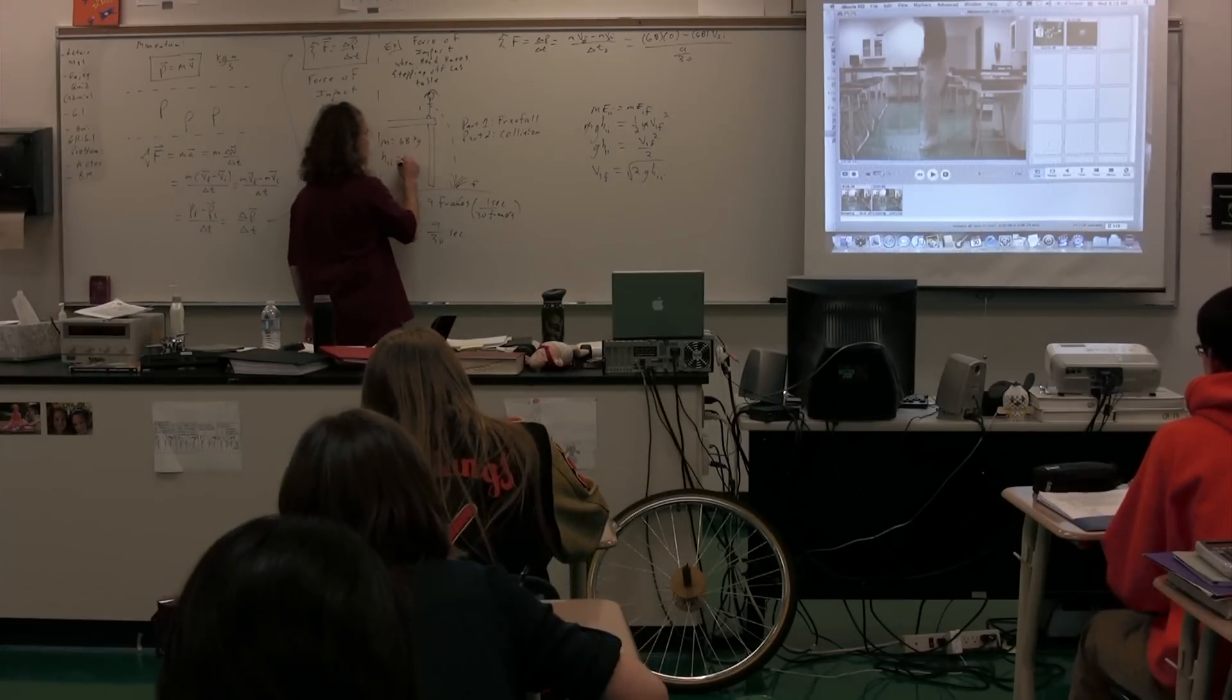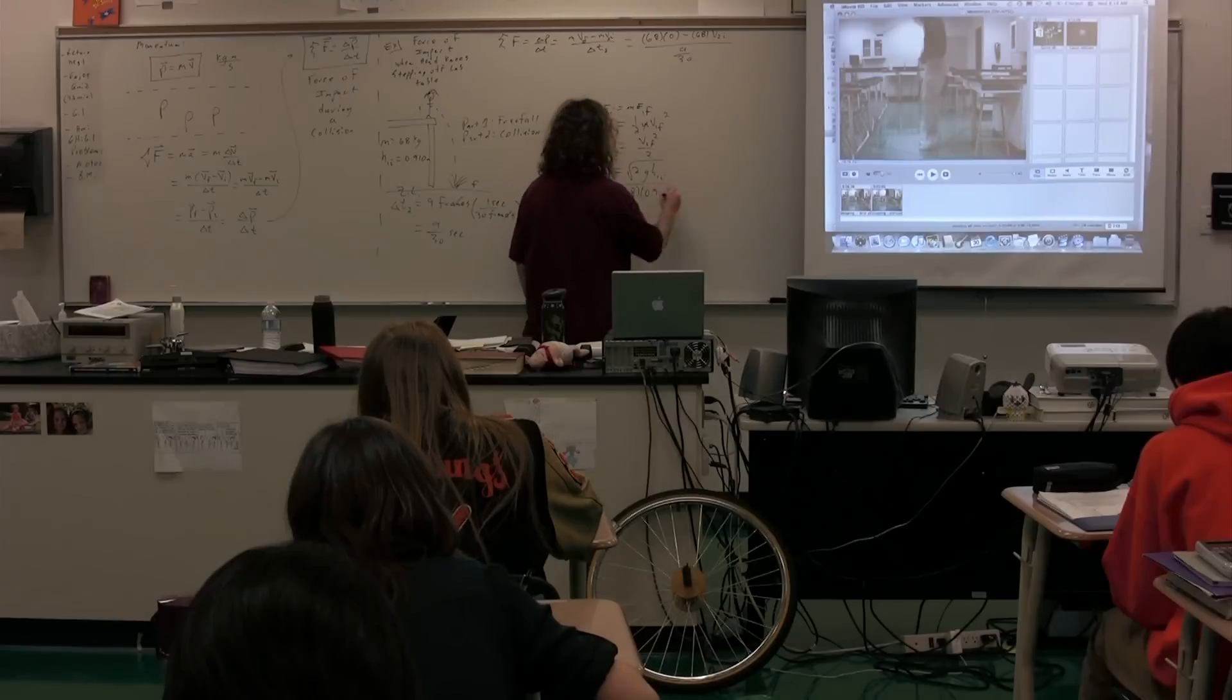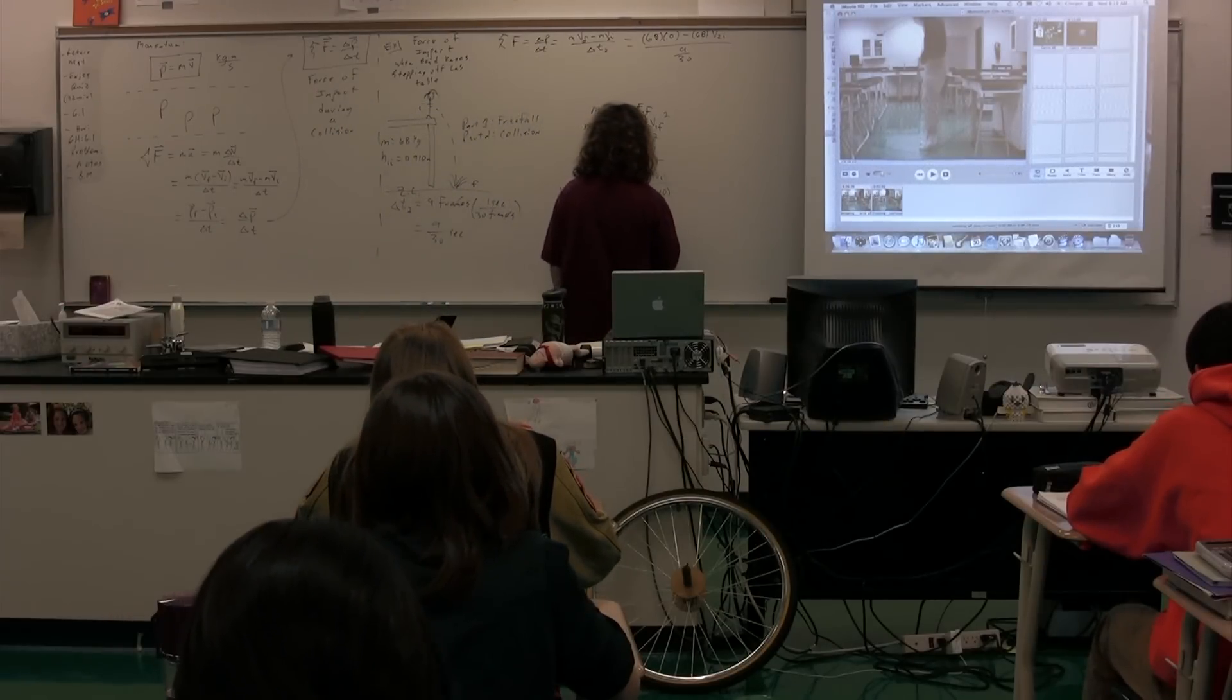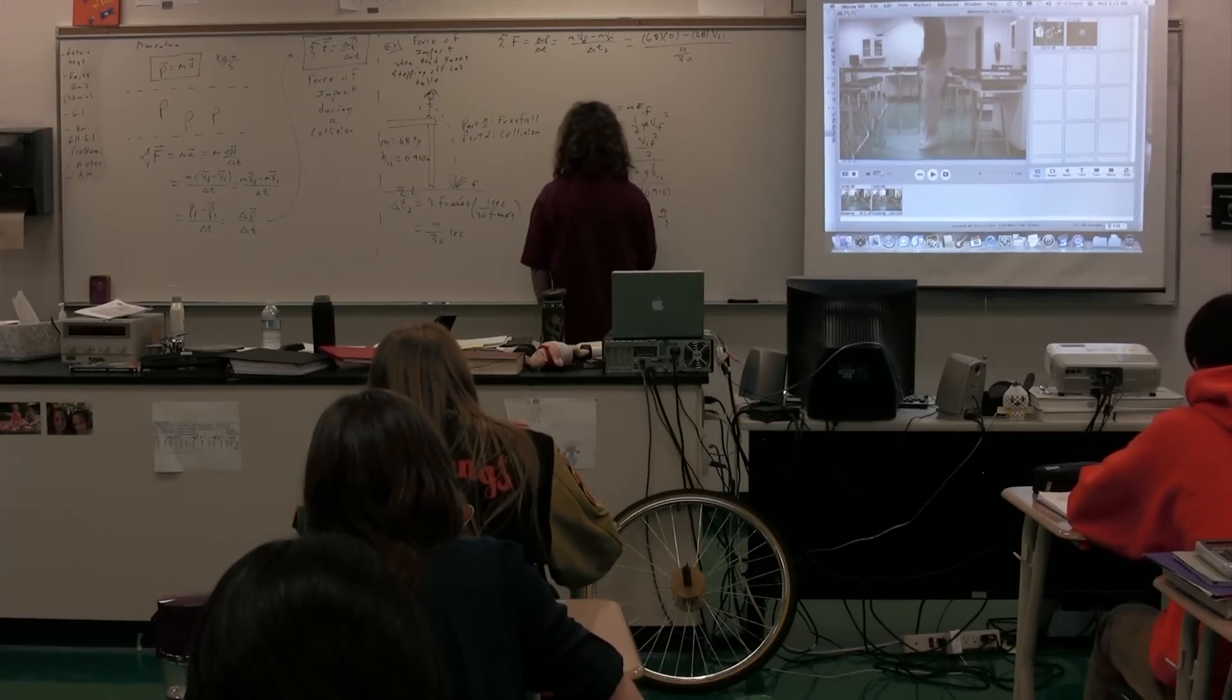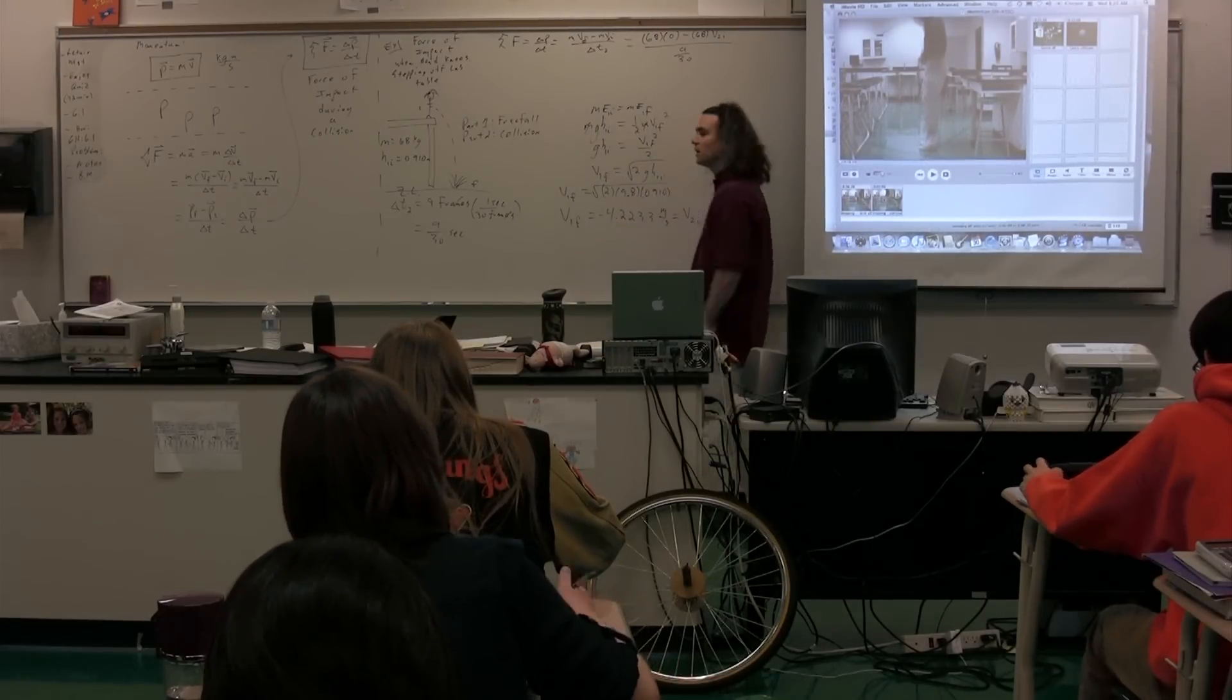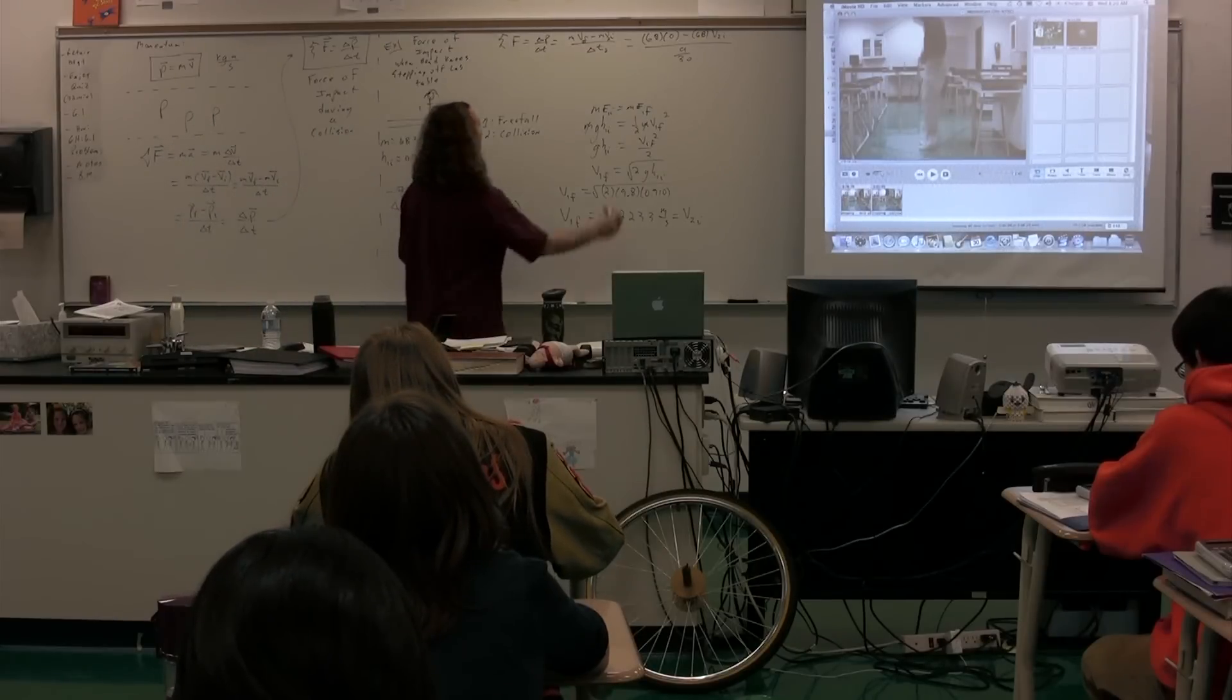So, height one initial equals 0.910 meters. So, we get for V1 final equals the square root of 2 times 9.8 times 0.910. V1 final, 3 sig figs is fine here, so we get 4.2233 meters per second. We know that's down. Because we take the square root, we can decide whether it's positive or negative. And so, we get the velocity one final, which is equal to, as we identified, V2 initial. So, we now get V1 final is equal to V2 initial. We have figured out the velocity for the second part initial.